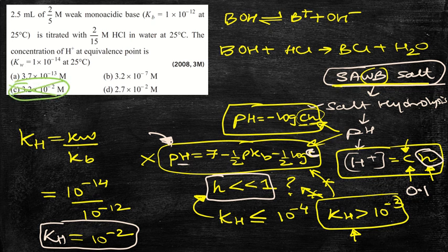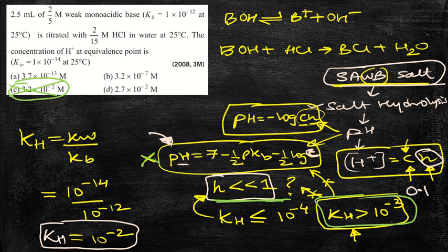Please understand that using the simplified formula — pH = 7 − ½pKb − ½log(C) — gives the wrong answer (option C). This formula is invalid here because h is not much less than 1, and that's because Kh = 10⁻² is much greater than 10⁻³. The correct answer is 2.7 × 10⁻², which is option D.